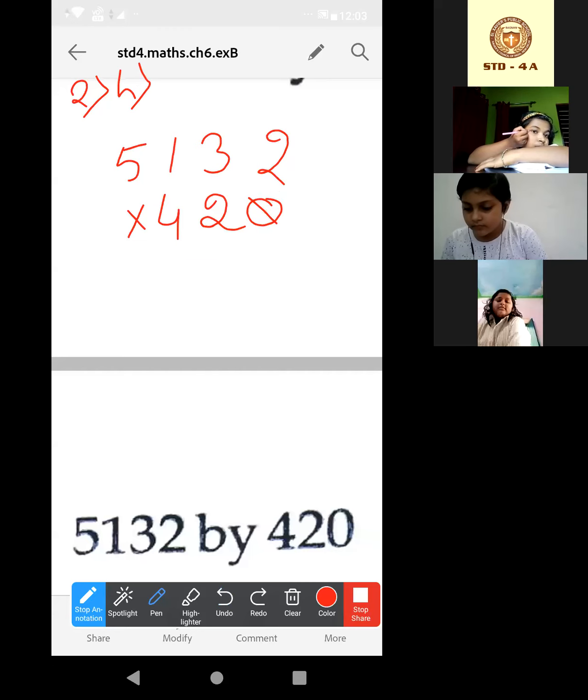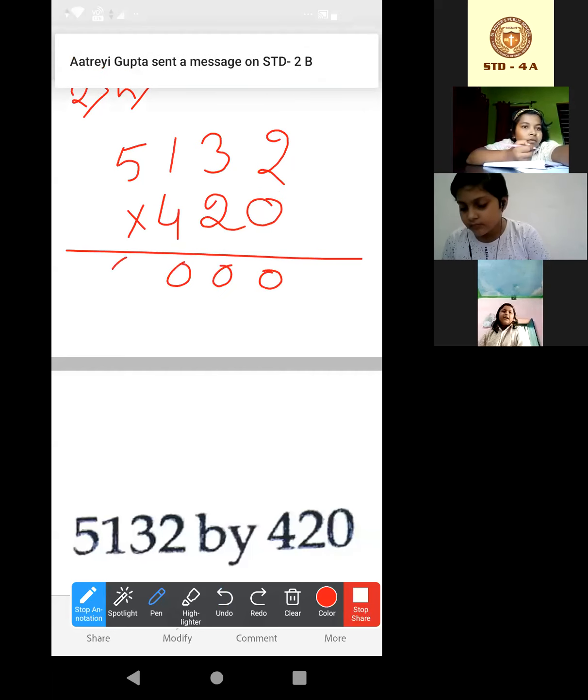Now I am doing normal multiplication. By 0 if we multiply then 0, 0, 0 and 0, right? This one done.